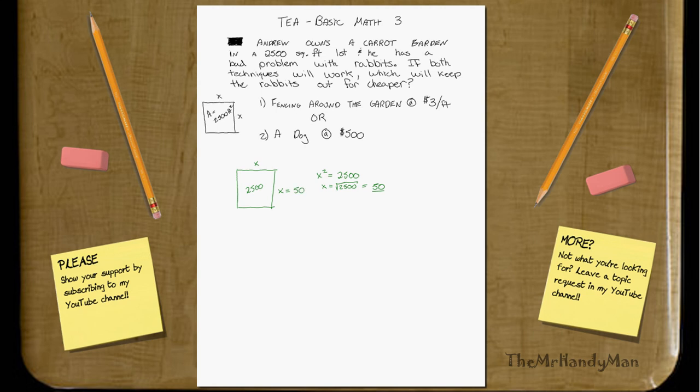So now that we worked that out, we have to find what the perimeter is so that we can add it up and find out how much fencing we need for technique 1.